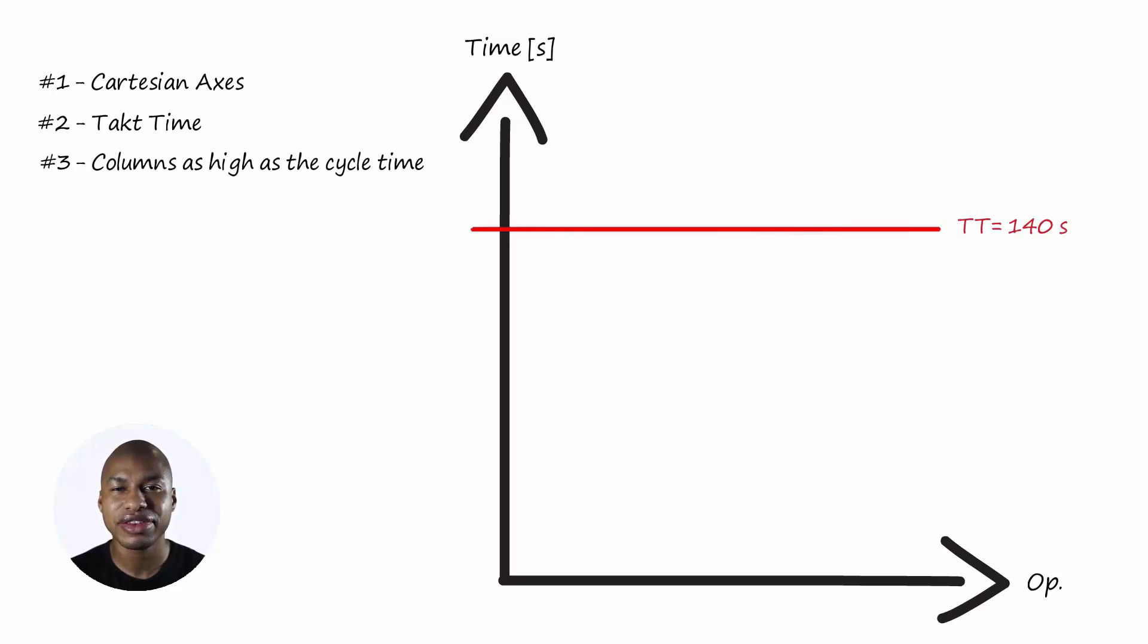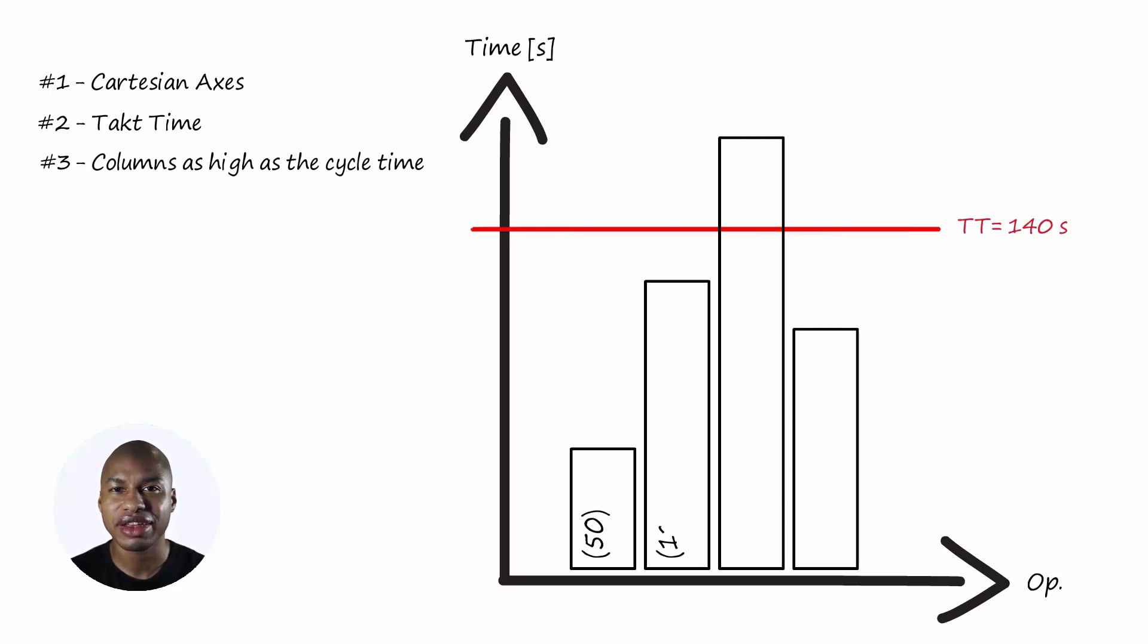Step 3: For each process of the production line, trace a column as high as the cycle time. Step 4: See which column exceeds the takt time.